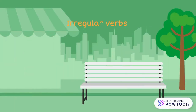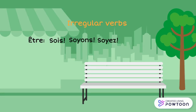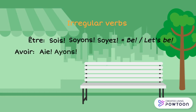A few verbs have irregular imperative forms. Unsurprisingly: 'Être' — 'Soit', 'Soyons', 'Soyez' — be, let's be. 'Avoir' — 'Aie', 'Ayons', 'Ayez' — have, let's have.